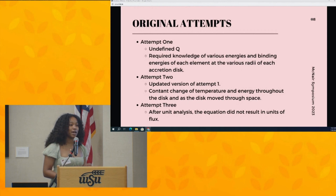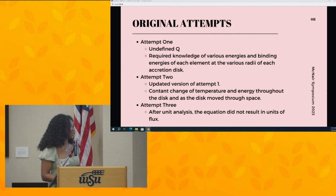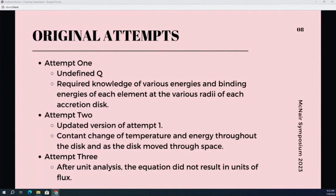The first equation had an undefined variable Q, so I reached out to the author but received no response. Me and the grad student I worked with assumed Q represented the binding energies of all the elements within the accretion disk, but this made it more complex than intended — requiring knowledge of all binding energies and assumptions about which elements exist in the disk. The second equation, from the same author, was a more updated version. It didn't involve binding energies, but it did involve a constantly changing temperature and energy, so that also became too complex.